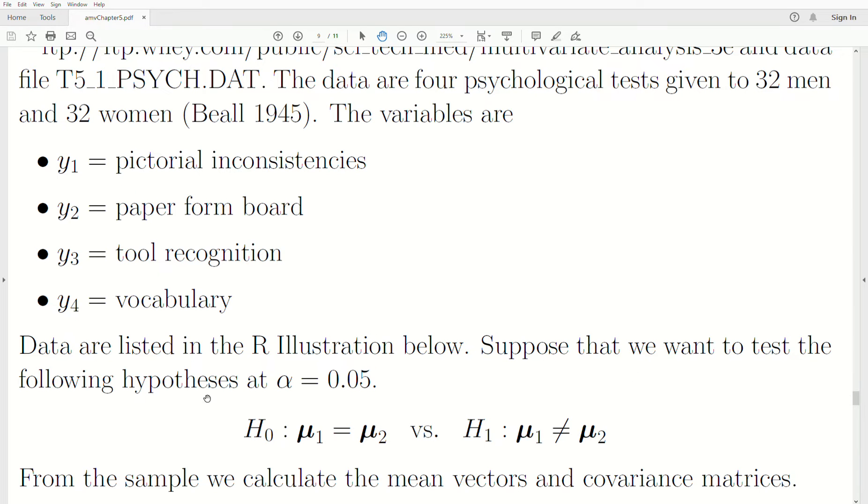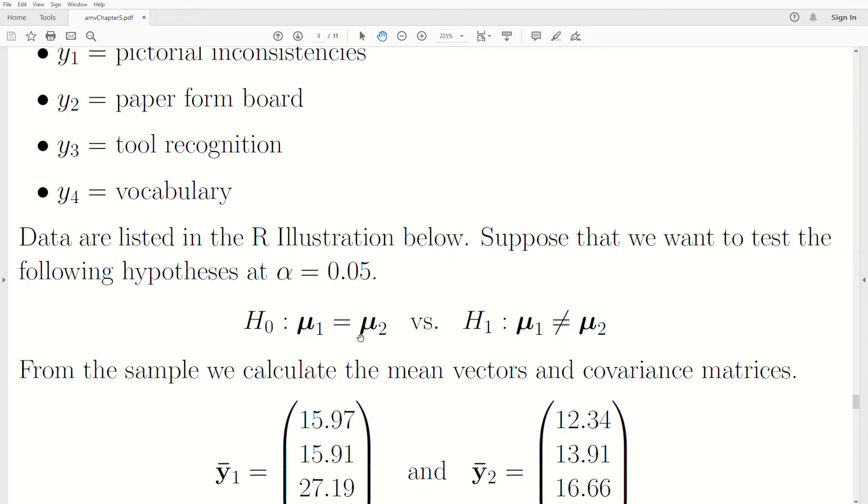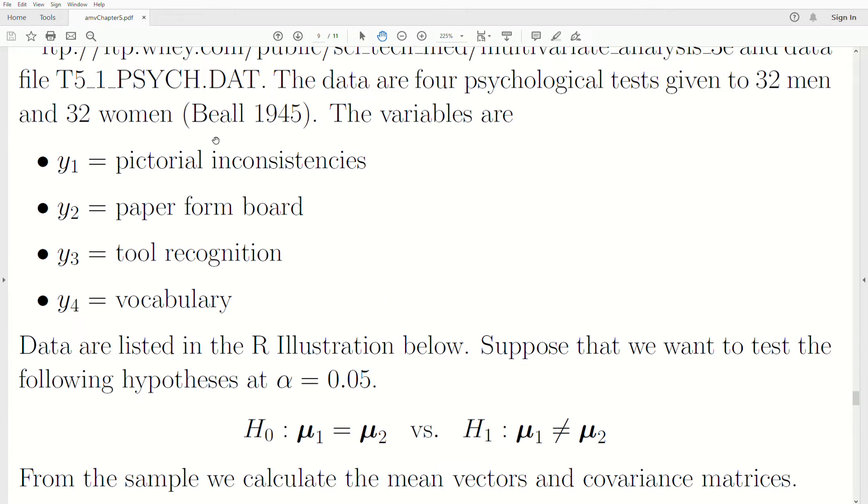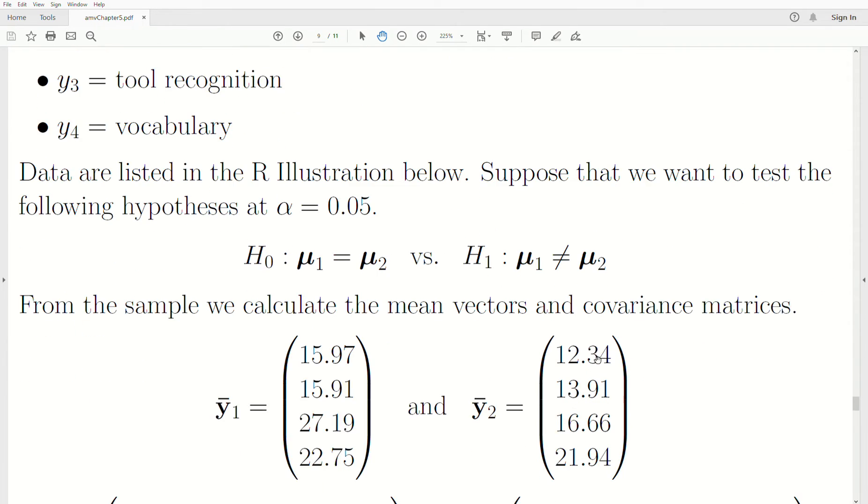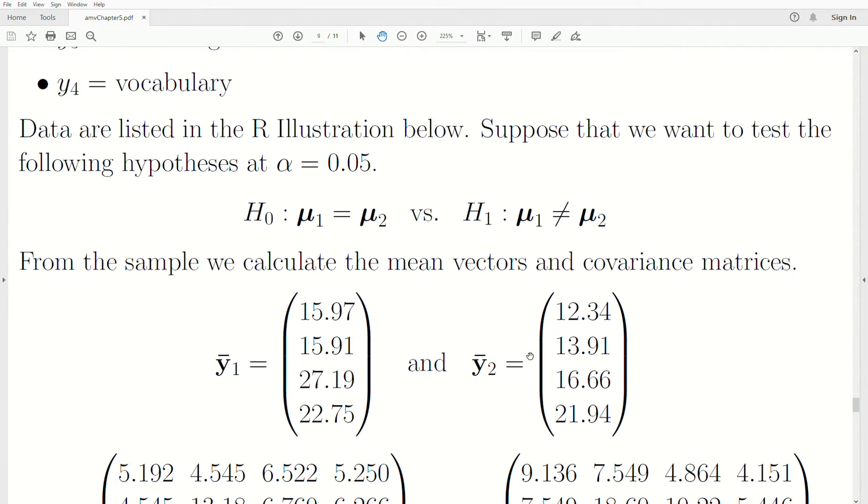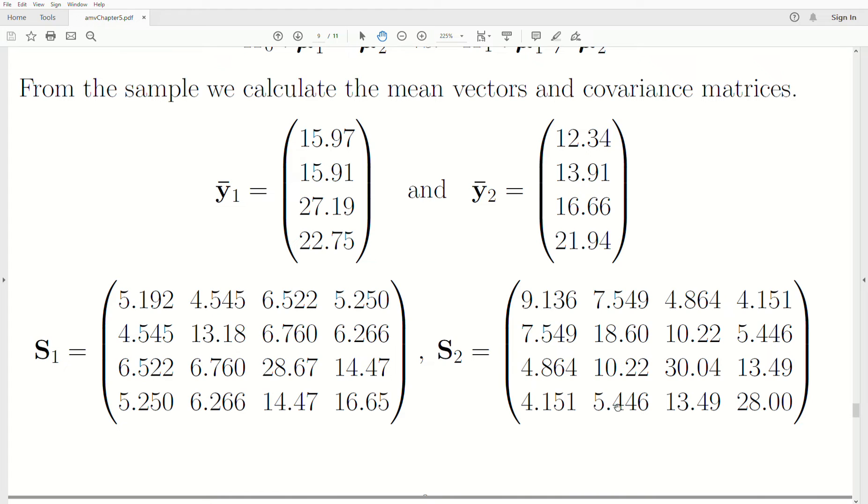Suppose we want to test the following hypothesis at α = 0.05. Are the population mean vectors the same? Notice it's one, two, three, four. So P is four. The dimension is four. Each observation is a vector of four by one. From the sample, we calculate the statistics - the mean vectors and covariance matrices. Here's the sample mean vector for population one, population two, and the sample covariances.